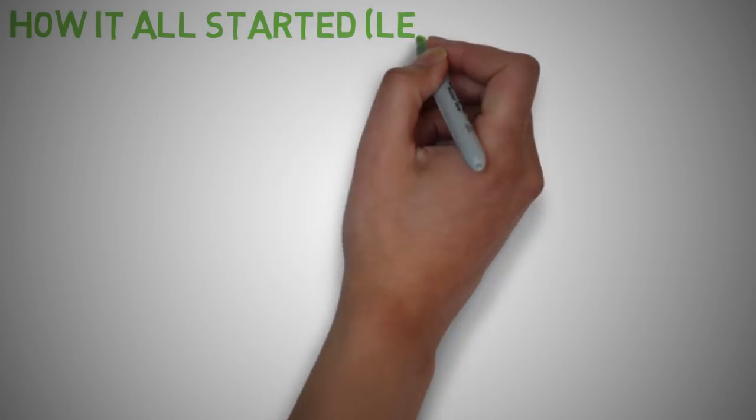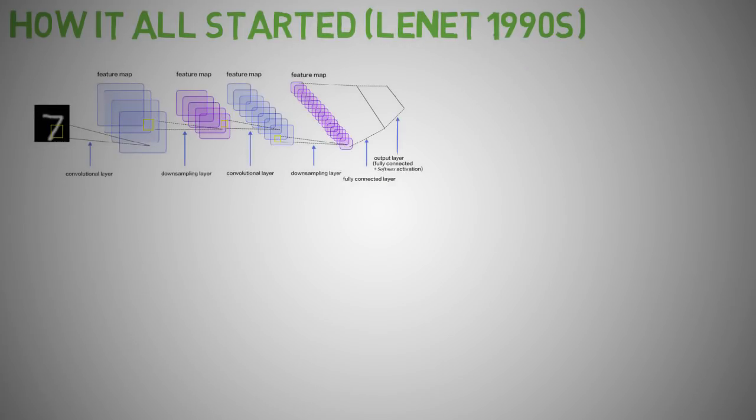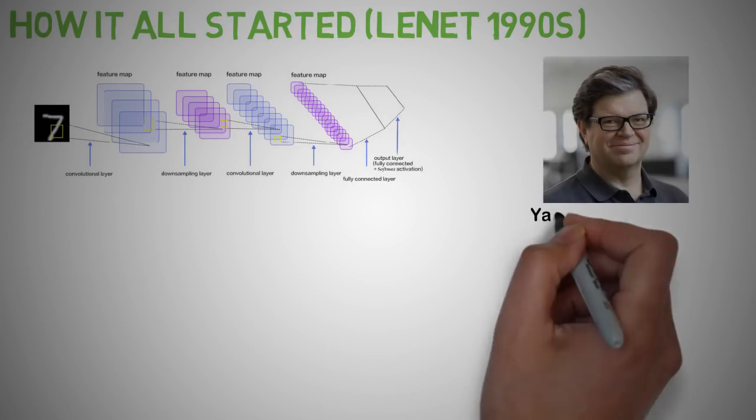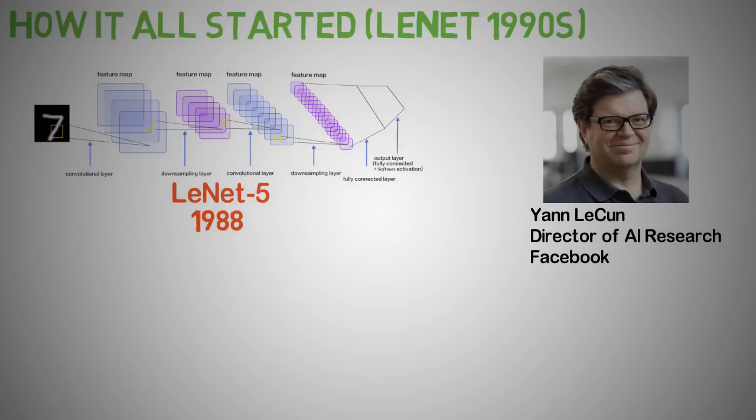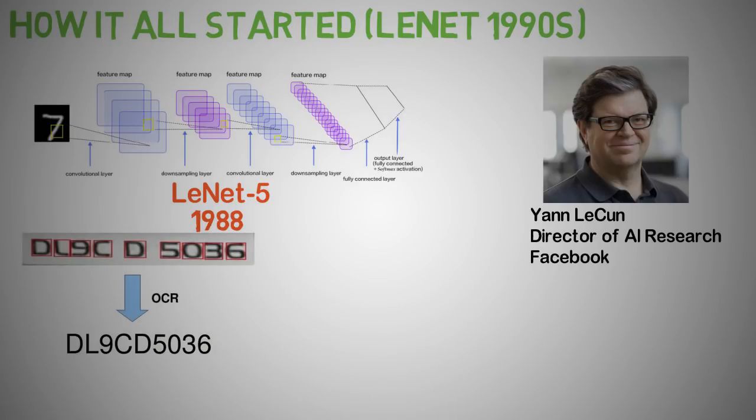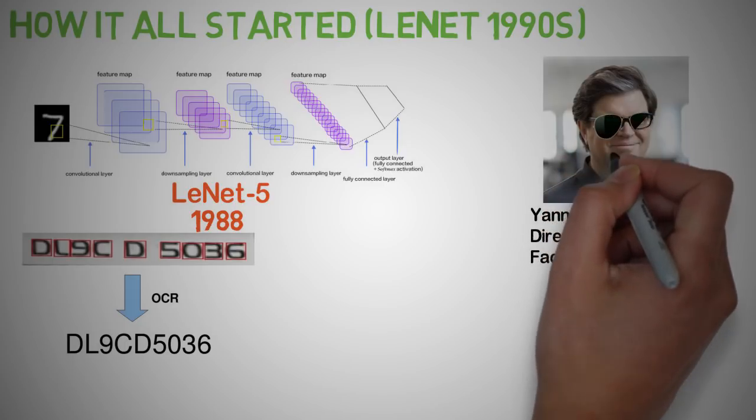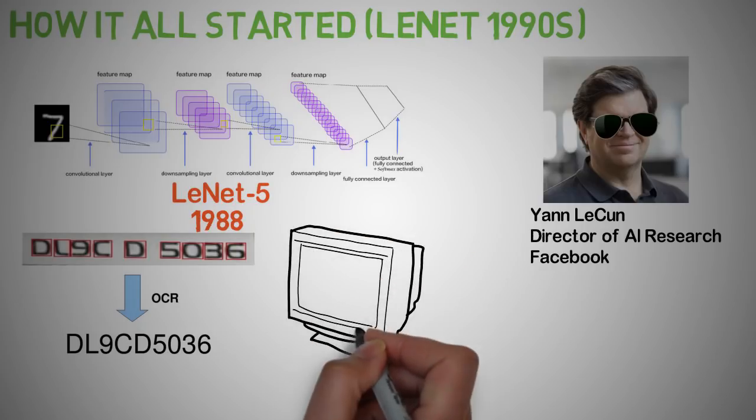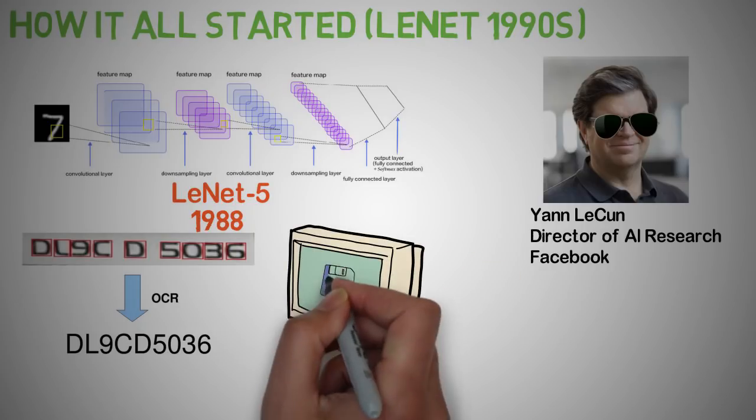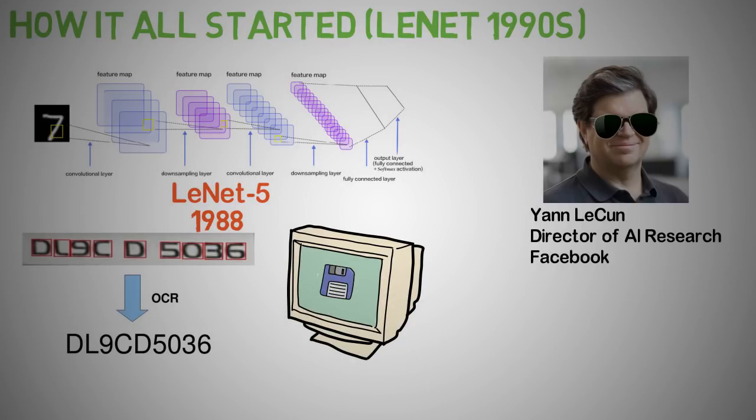Let's take a look at how it all got started. LeNet was one of the very first convolutional neural networks which helped propel the field of deep learning. This pioneer work by Yann LeCun was named LeNet-5 after many previous successful iterations since the year 1988. At that time the LeNet architecture was mainly used for character recognition tasks such as reading zip codes and digits. Since then there was a pause in the development of convnets and neural networks in general due to a lack of significant computing power at the time. Convnets started picking up around 2012 with AlexNet amongst others.